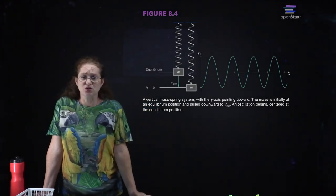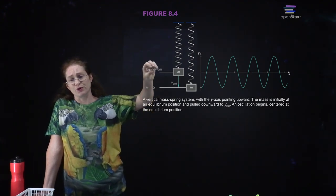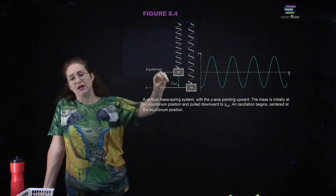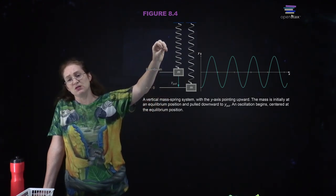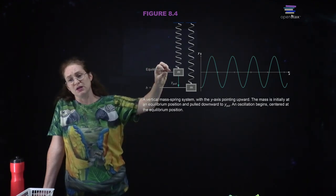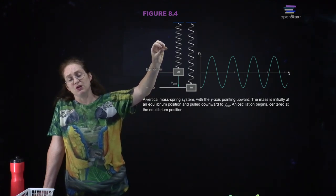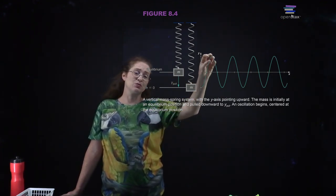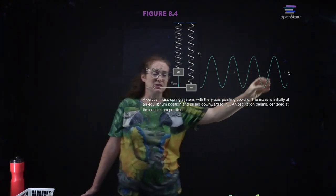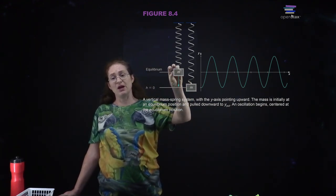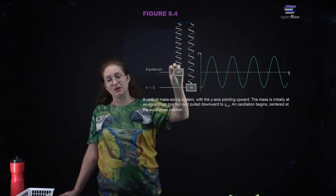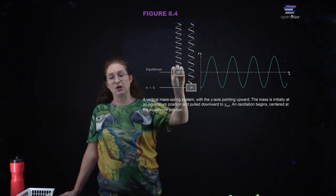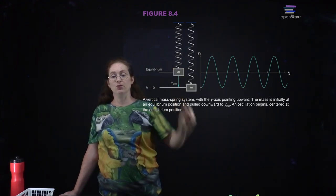You can also have potential energy due to springs. If you have a spring at its equilibrium position and you pull it down, you're increasing its potential energy. As it flies back up, at some point the spring is compressed. At equilibrium, all of the energy is kinetic. As it flies up, you get more potential energy. The spring bounces back and forth about its equilibrium position — kinetic energy is at a minimum at the top and bottom, and at a maximum in the middle, with potential energy oscillating up and down.